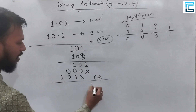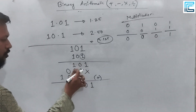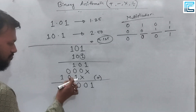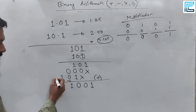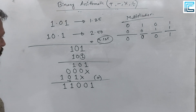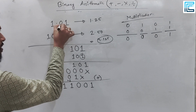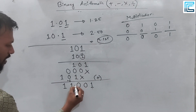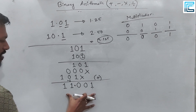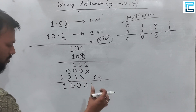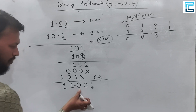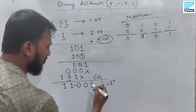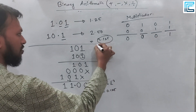The multiplication result: the position 2 to the bar minus 3 gives 0.125. The ultimate result is 3.125. Overall, we can see the decimal equivalents. Now we move on to binary division.